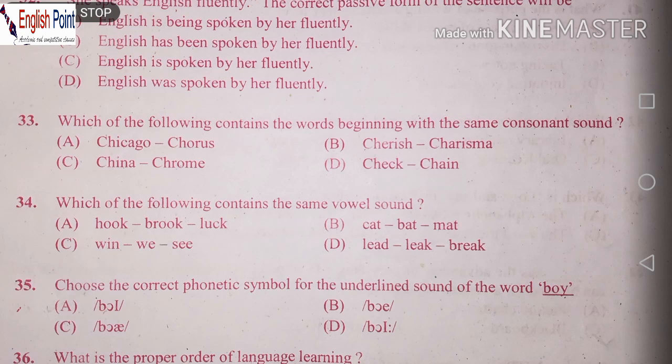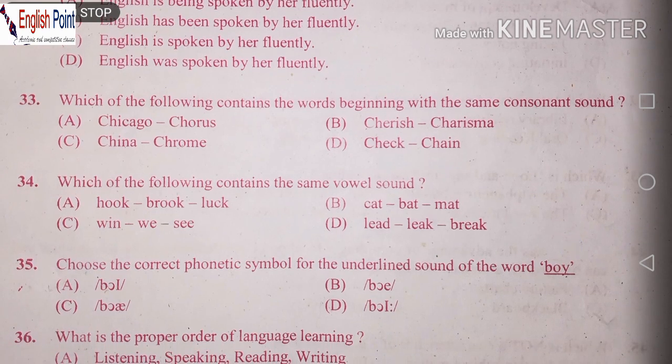Which of the following contains the same vowel sound? Vowel sound: Hook, Brook, Lut, Here. Cat, Bat and Matt. Lead, Leak, Break. The right answer is Cat, Bat and Matt.